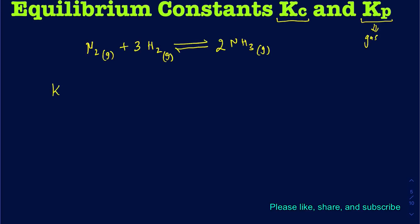Let me write down what the Kc expression is going to look like. For the Kc expression, I would write down the concentration of NH3 to the power 2, divided by the concentration of N2 to the power 1 times the concentration of H2 to the power 3.